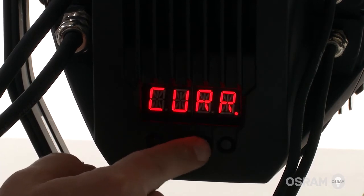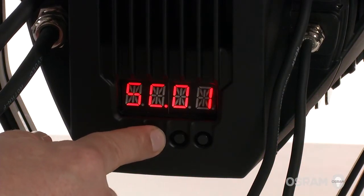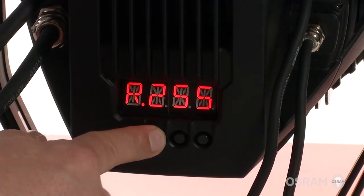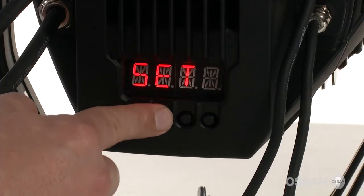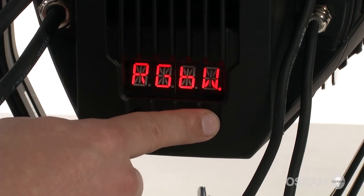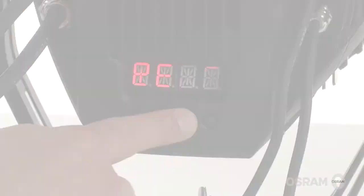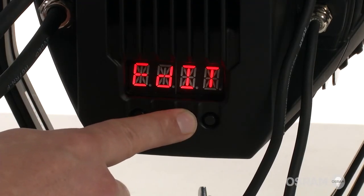In edit mode you can change the programming of the 10 customized sequences that can be used under AUTO. Under set you can access the settings options such as high and normal power mode, dimming curves, or firmware updates. For a detailed explanation of the chapters edit and set, please find further information in the manual.